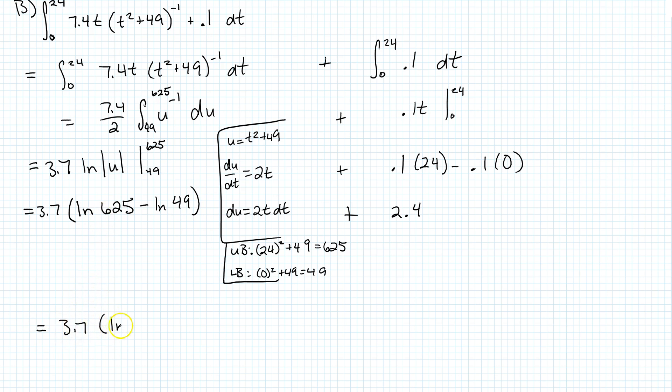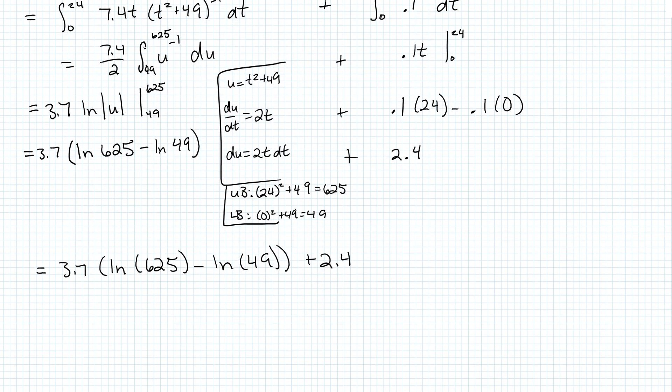So 3.7 ln 625 minus ln 49 plus 2.4. So type all of that into your calculator and then divide by 24 because it's an average value problem and we're doing it over 24 months. And if you do that and type it all into your calculator, you're going to end up with 0.492, which will be your second answer.